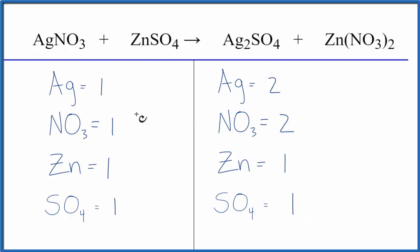So this should be pretty straightforward to balance. We have one silver, we need two. We have one nitrate, we need two. If we put a coefficient of two in front of this silver nitrate, one times two, that gives us two silvers, those are balanced.